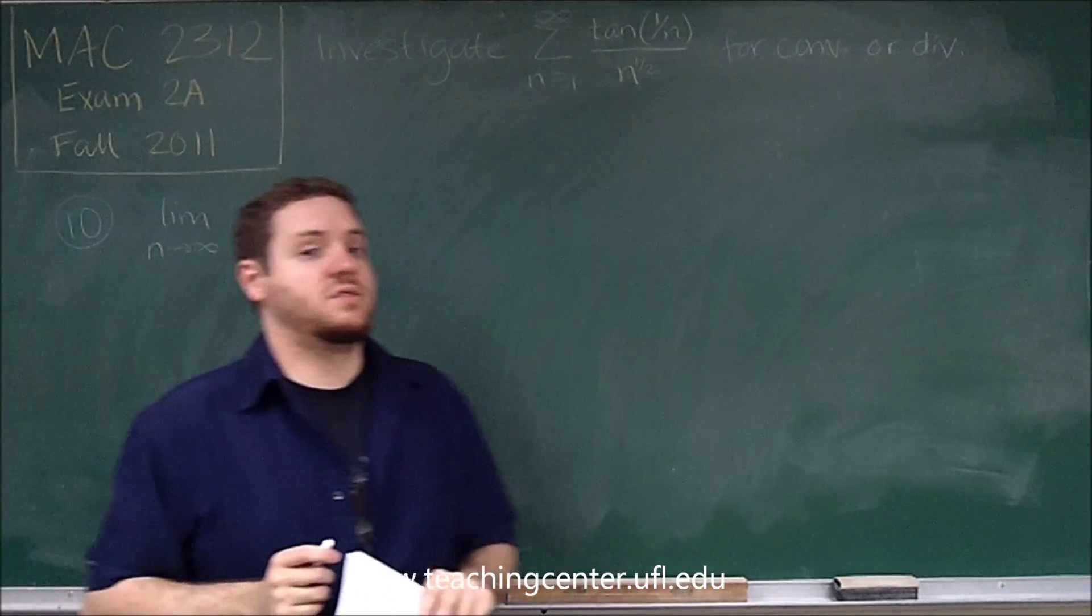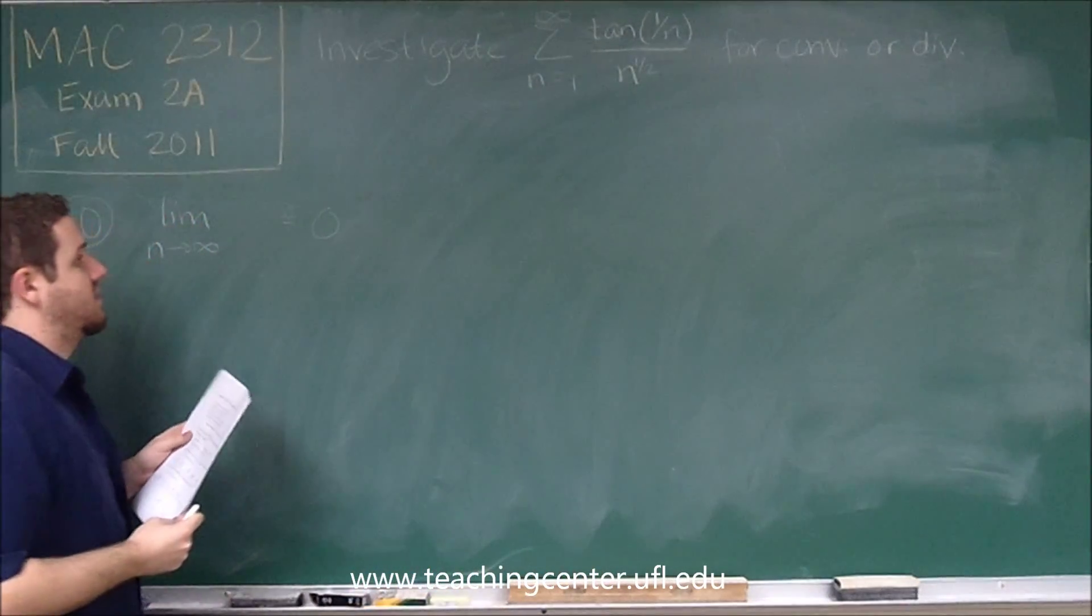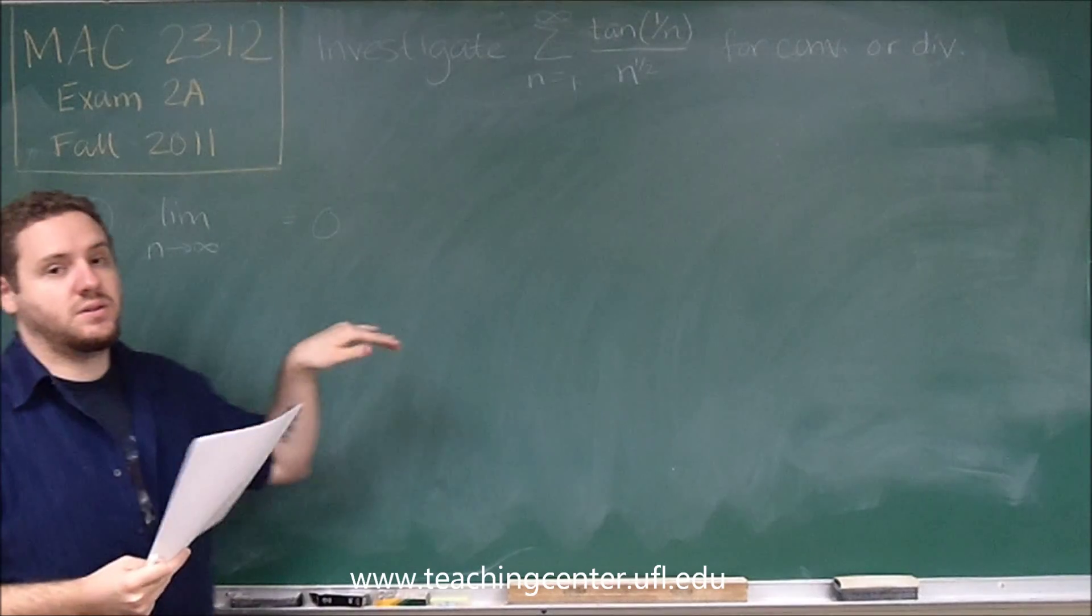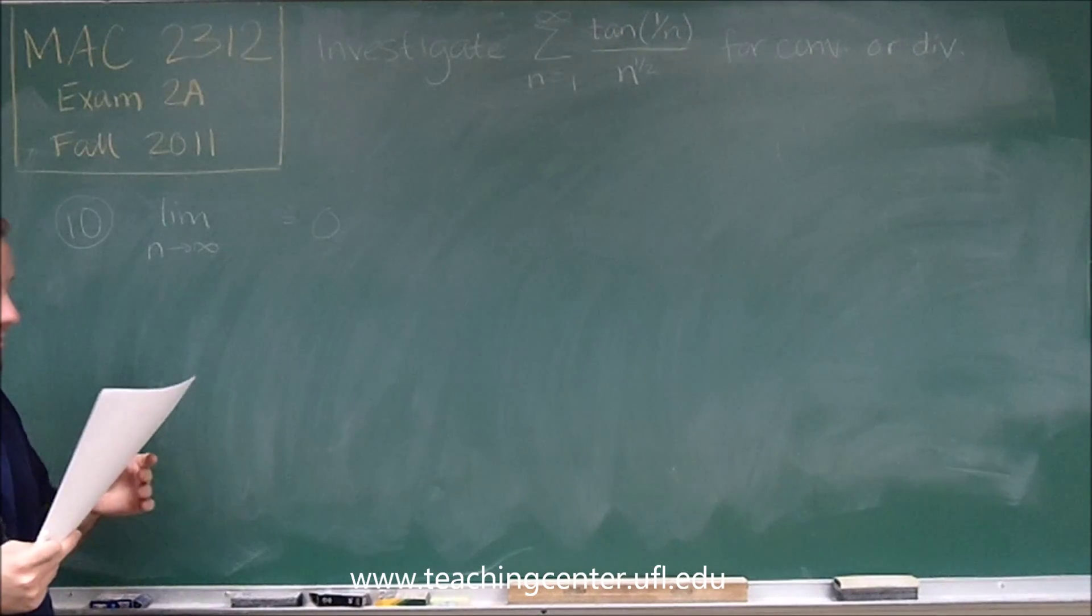So therefore, the test for divergence tells us nothing. Because remember, all that test for divergence says is that if it's not 0, it diverges. Well, we have 0, so that could be either way. So that gets rid of a and b.